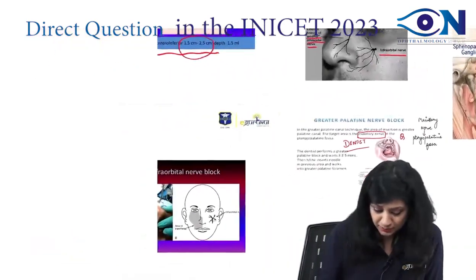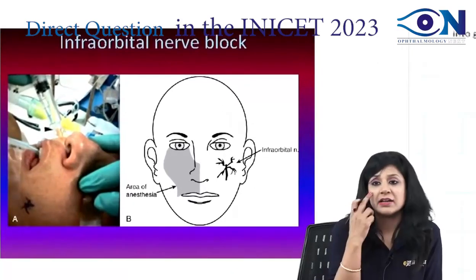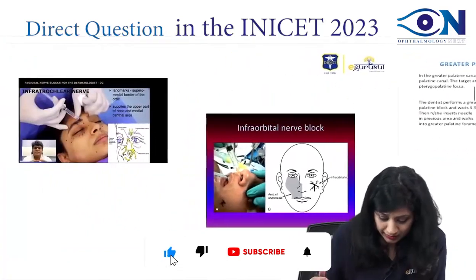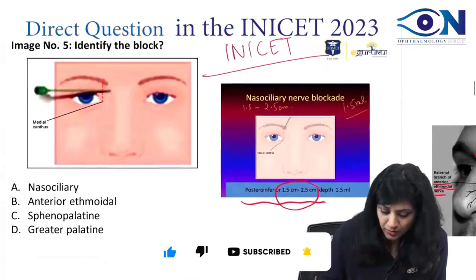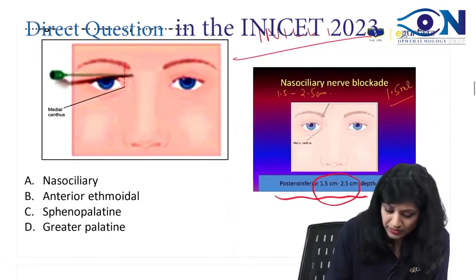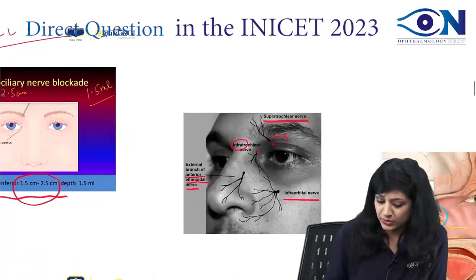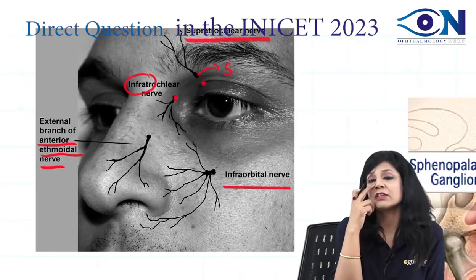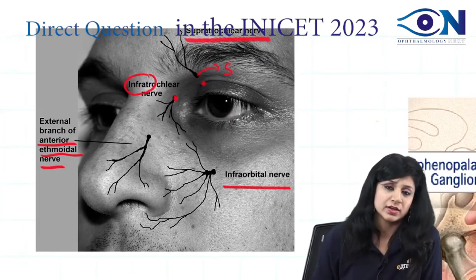That line is important. This is your infraorbital nerve — in this area you can give the infraorbital nerve blockade. And we have the infratrochlear also. But what they have given in the question? This is your nasociliary block, so the answer will be nasociliary. Somebody was saying anterior ethmoidal — look at the location of anterior ethmoidal, it is near the nose, not near the middle canthus. Near the middle canthus is your nasociliary blockade.